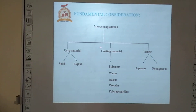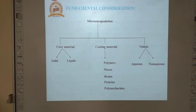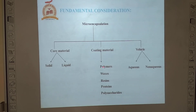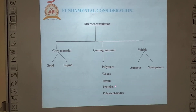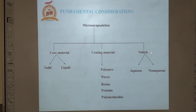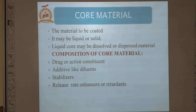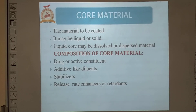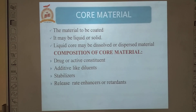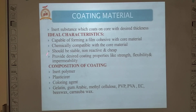Microcapsules require three components: core material, coating material, and vehicle. The core material is either solid or liquid. We can use different coating materials such as polymers, waxes, resins, proteins, and polysaccharides. The vehicle may be aqueous or non-aqueous. These are some of the properties of the core material and the coating material.